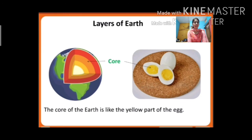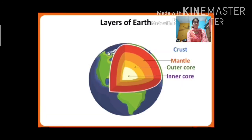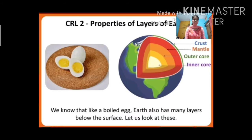The third layer is the core, which is like the yellow part of the egg. Now we have learned there are three layers of the earth: the first is the crust, the second is the mantle, and the third is the core. The core has two parts — the outer core and the inner core.